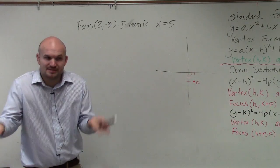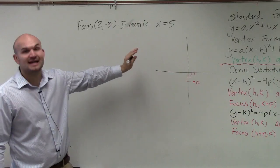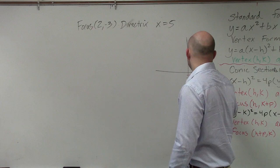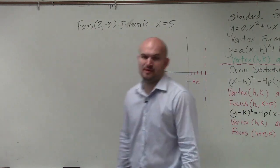The focus is a point, so we plot it as a point. The directrix is the line, so we plot it as a line. X equals five. One, two, three, four, five. Okay, so now we have this thing. We have a focus and we have a directrix.